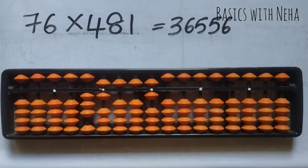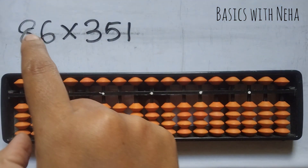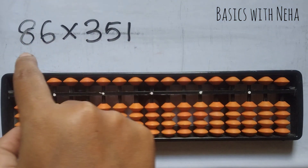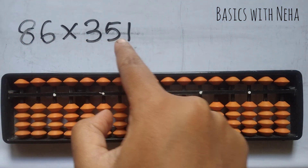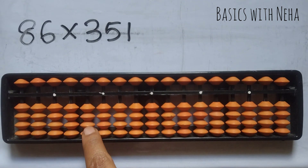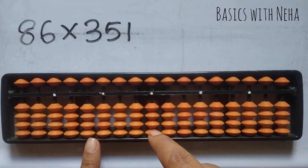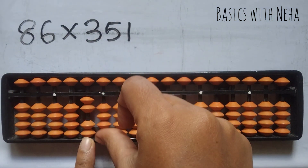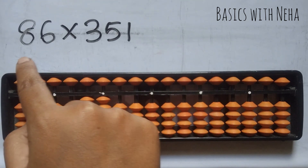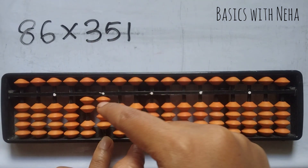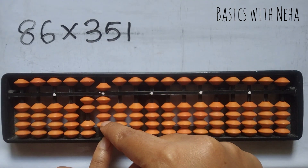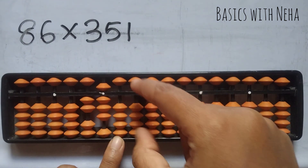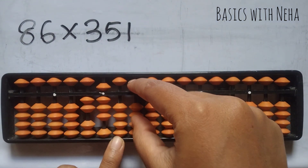Now the next question: 86 into 351. So there are 5 numbers, take the 5th rod from the house pointer 1s rod. 8 threes are 24. 8 fives are 40. To place 4, it is plus 5 minus 1, and 0. 8 ones are 8 — it will be 0 and 8.